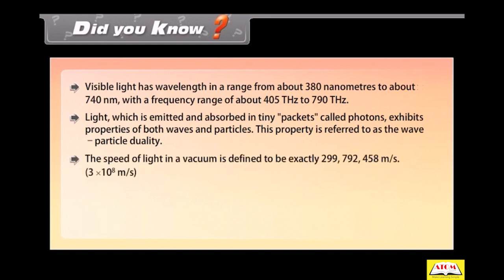The speed of light in a vacuum is defined to be exactly 29 crores, 97 lakhs, 92,000, 458 meter per second, that is 3 into 10 raised to the power 8 meter per second.